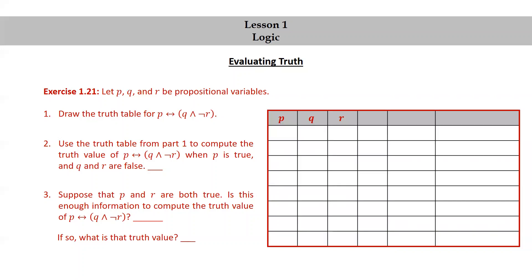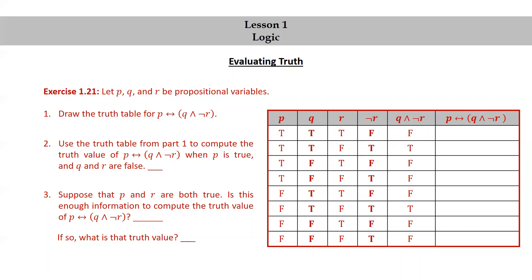Starting with the truth table: once again, there are three propositional variables, so we will need three columns for those variables, and 2 to the third, or 2 times 2 times 2 equals 8 rows. Let's put down all the truth assignments. We're going to need columns for not r, q and not r, and p if and only if q and not r. For the not r column, we take the opposite truth values in the r column. Then we use the q and not r columns to generate q and not r. Then we use the p column and the q and not r column to generate the final column, p if and only if q and not r.